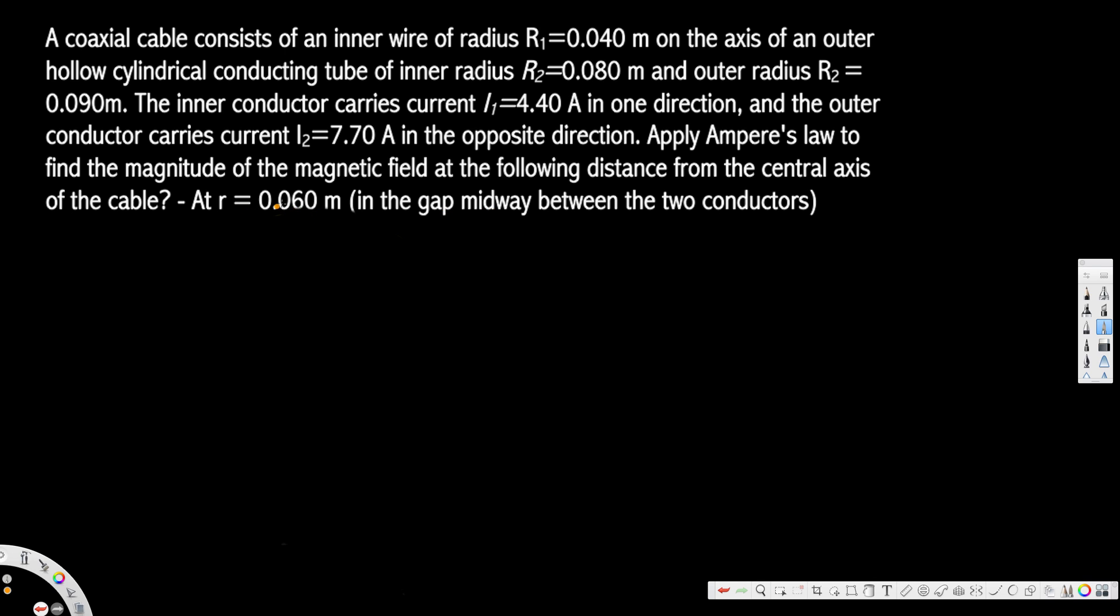Let's draw the diagram for this question. We're going to have a few circles: first an inner circle representing the wire, then the distance at r = 0.06 m, after that 0.08 m, and finally 0.09 m.